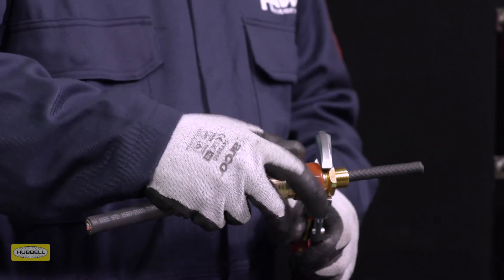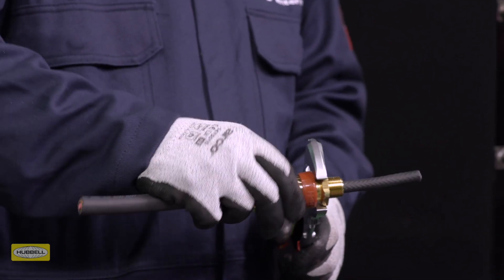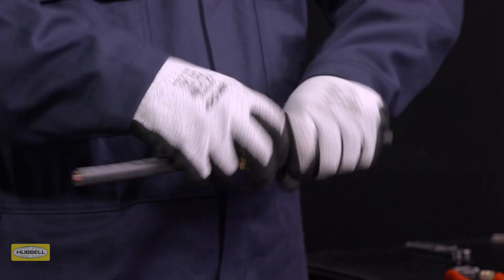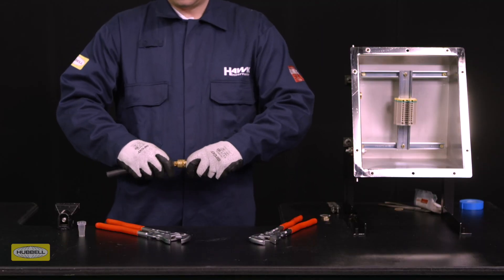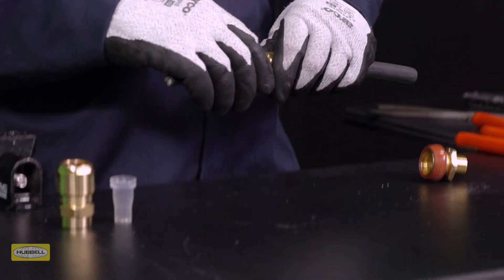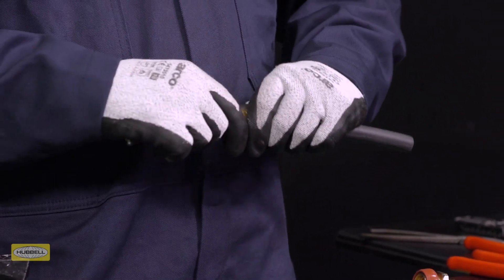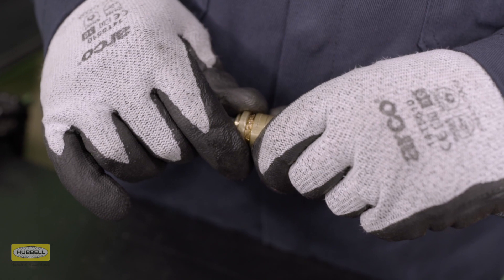Unscrew the middle nut. The armor clamping ring should now be locked in place. Visually inspect that the armor or braid has been successfully clamped between the spigot and the armor clamp ring. If it isn't satisfactory, repeat the previous step.